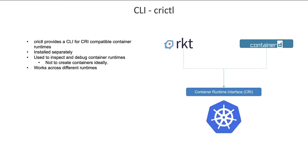Now that we have talked about CTR and nerdctl, it's important to talk about another command line utility known as crictl. Earlier we talked about the Container Runtime Interface or CRI, which is a single interface used to connect CRI-compatible container runtimes — ContainerD, Rocket, and others. The crictl utility is a command line tool used to interact with CRI-compatible container runtimes. This tool is developed and maintained by the Kubernetes community, and works across all different container runtimes — as opposed to CTR and nerdctl, which were built by the ContainerD community specifically for ContainerD.